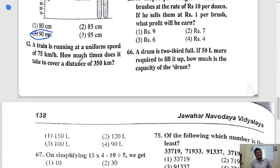Question 62. A train is running at uniform speed of 75 km per hour. How much time does it take to cover 350 km? What we have to do? It runs in 1 hour 75 km. How many hours it takes to run or cover 350 km? We have to divide 350 divided by 75.